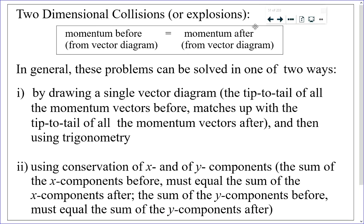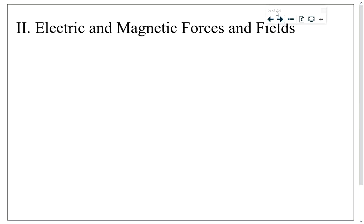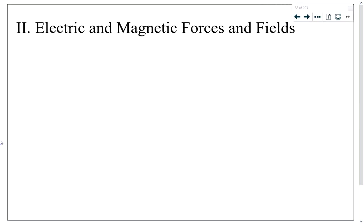That is the end of Unit 1. Now starting Unit 2: Forces and Fields — specifically electric and magnetic forces and fields. A force is applied to an object and creates acceleration if it's a net force. A field is a more abstract idea that explains where forces come from.